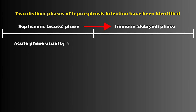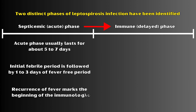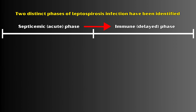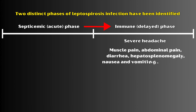The acute phase usually lasts for about 5 to 7 days. The initial febrile period is followed by 1 to 3 days of fever-free period. Recurrence of fever marks the beginning of the immunologic phase. During this phase, patients will have severe headache which does not respond to simple analgesics, muscle pain, abdominal pain, diarrhea, hepatosplenomegaly, nausea and vomiting, and anorexia.